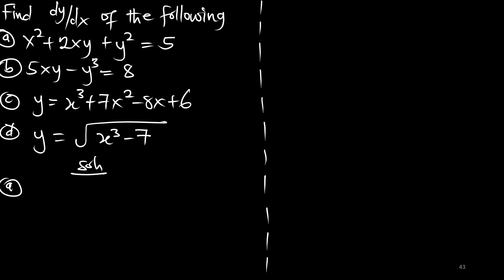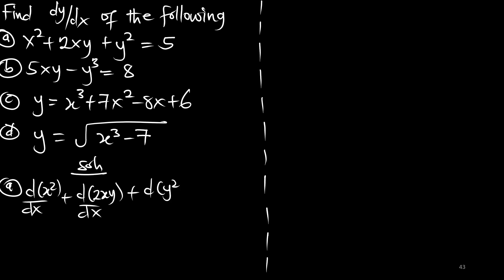First we apply the derivative to x squared with respect to dx, plus we apply the derivative to 2xy with respect to dx, and the derivative to y squared with respect to dx, and the derivative to the constant 5 with respect to dx.